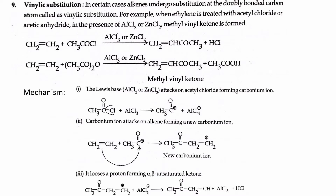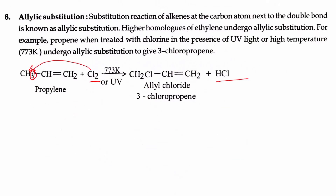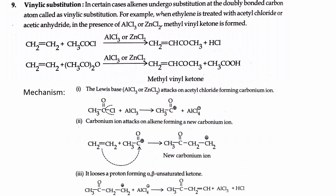Another type of reaction is vinylic substitution. In vinylic substitution, the substitution occurs at the double-bonded carbon itself. In allylic substitution, the substitution was at the carbon adjacent to the double bond, but in vinylic substitution it is directly on the double-bonded carbon. For example, the ethylene molecule.